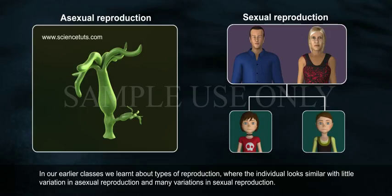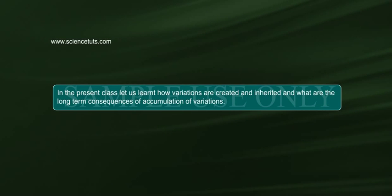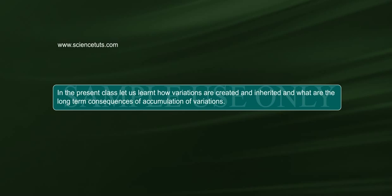In our earlier classes, we learned about types of reproduction where the individual looks similar with little variation in asexual reproduction and many variations in sexual reproduction. In the present class, let us learn how variations are created and inherited, and what are the long-term consequences of accumulation of variations.